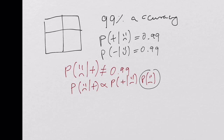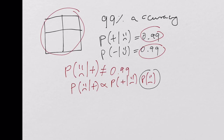Another way to think about this is that we only have two data points — two pieces of information. But the joint probability, which is what we need to completely specify everything, has three degrees of freedom, so we need three pieces of information to fully make inference.